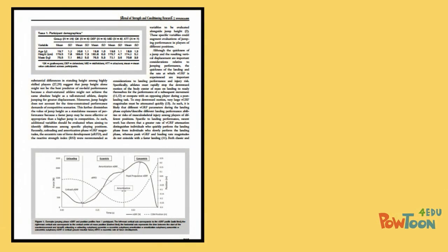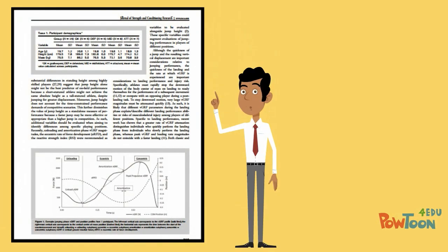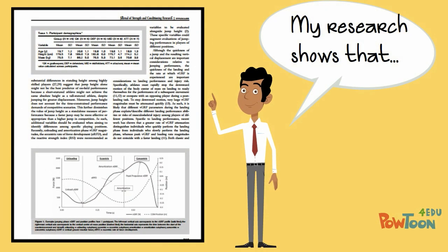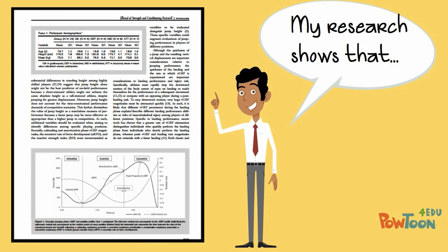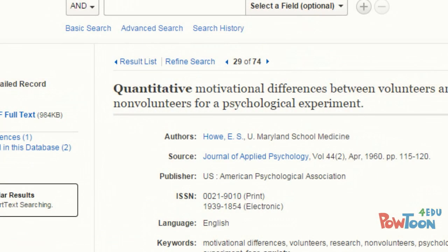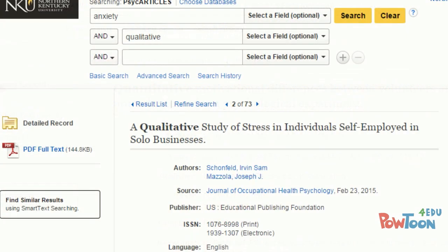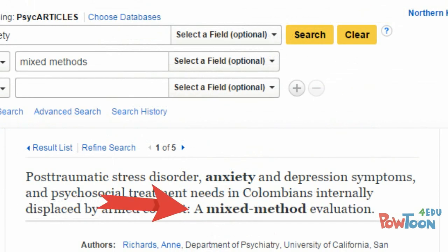Research articles are those that report the findings of an original research study or experiment. Some research articles describe quantitative research, some describe qualitative, and some describe a mixed methods approach.